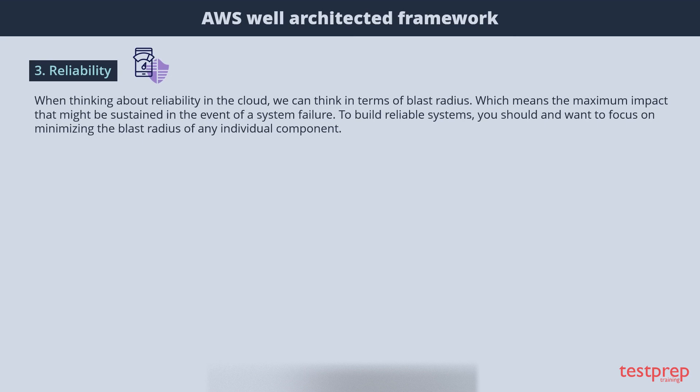When thinking about Reliability in the cloud, we can think in terms of blast radius, which means the maximum impact that might be sustained in the event of a system failure. To build reliable systems, you should focus on minimizing the blast radius of any individual component.